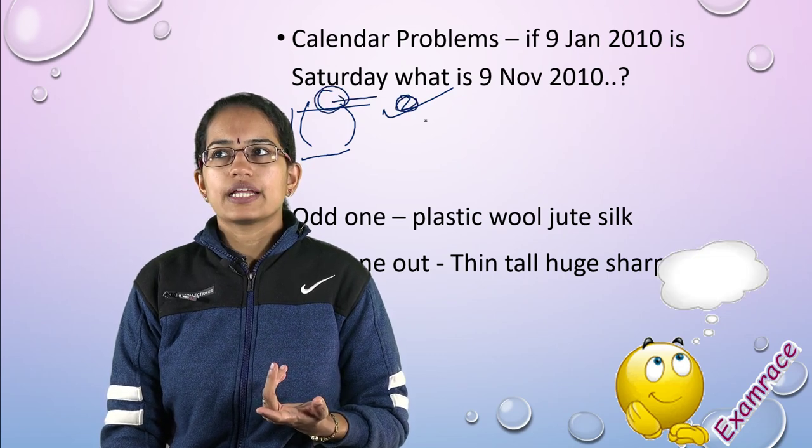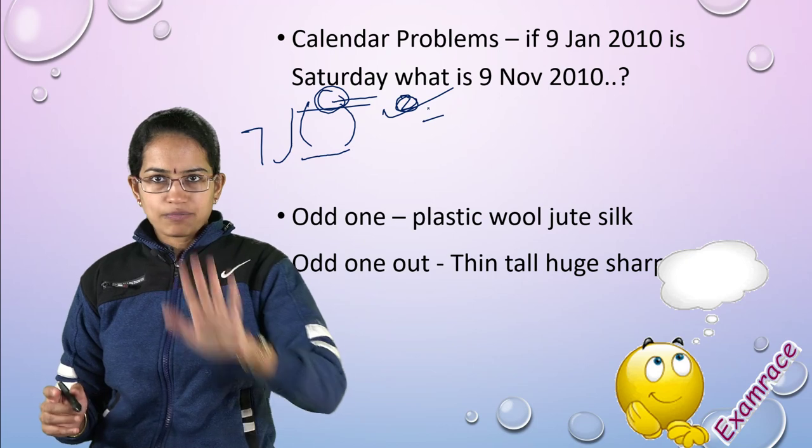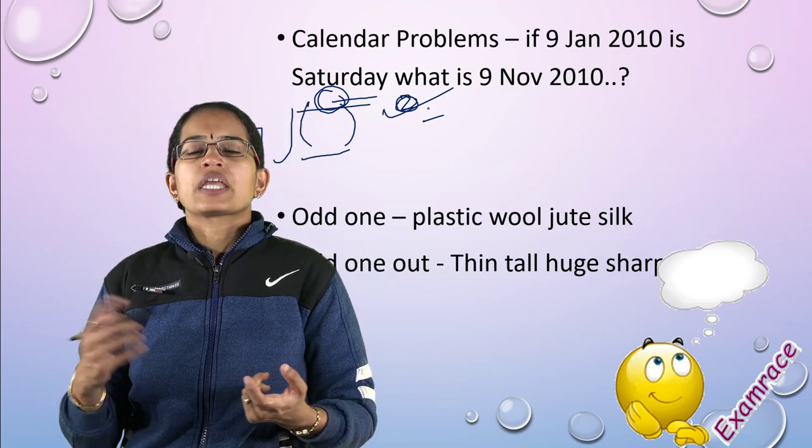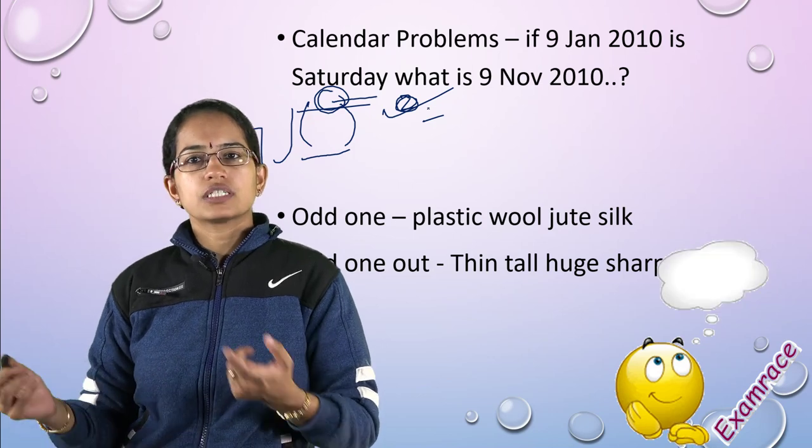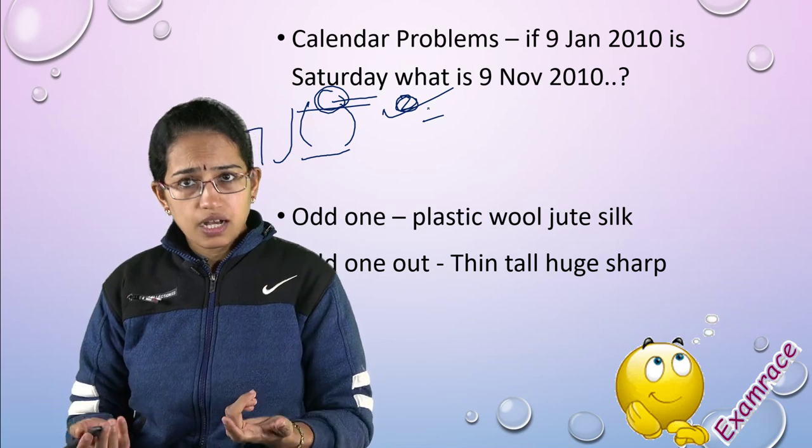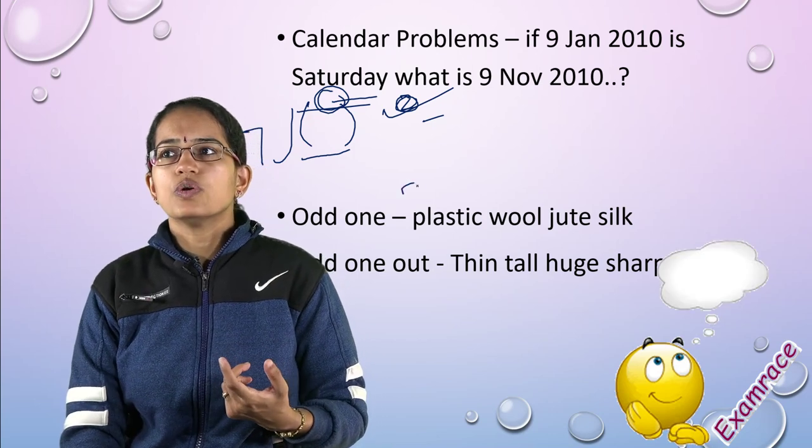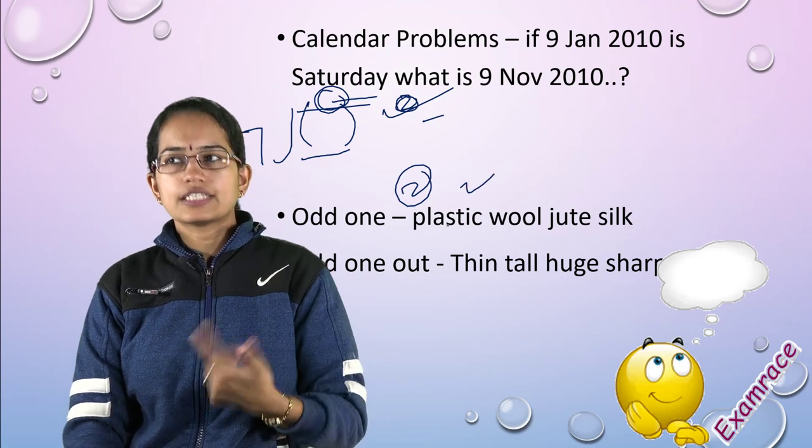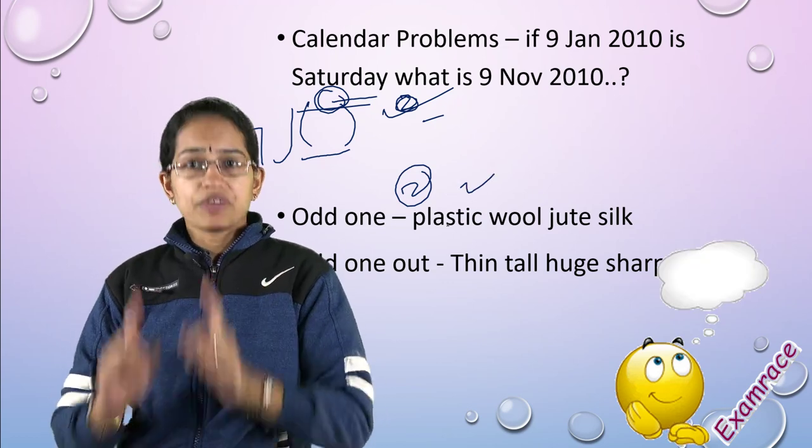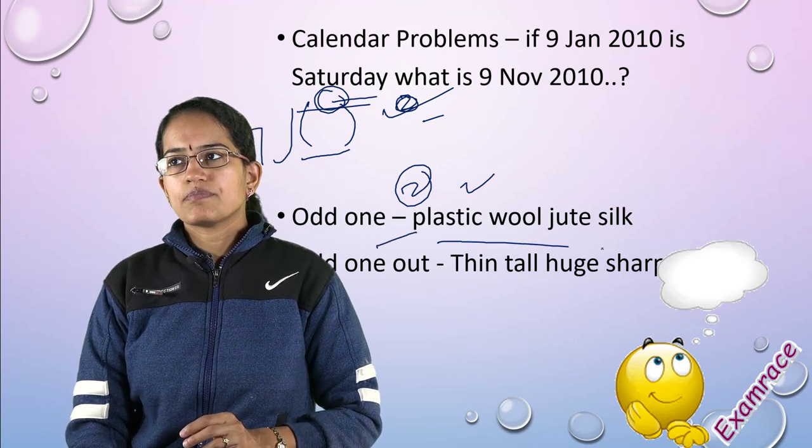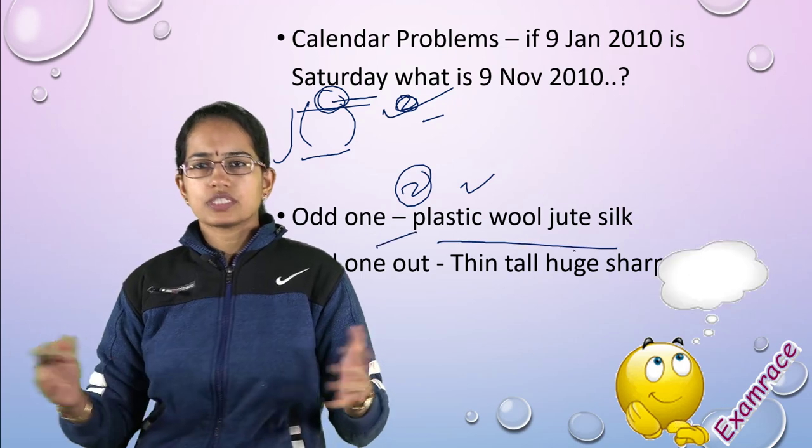Once you're done adding all the days, you have some value. Divide by 7. If you have 0 remainder, it means 9 November 2010 would again be a Saturday. But if it's a remainder of 2, you add two more. After Saturday, it would be Sunday and Monday. That's how you solve calendar problems - very important, we've been discussing it through our classes.